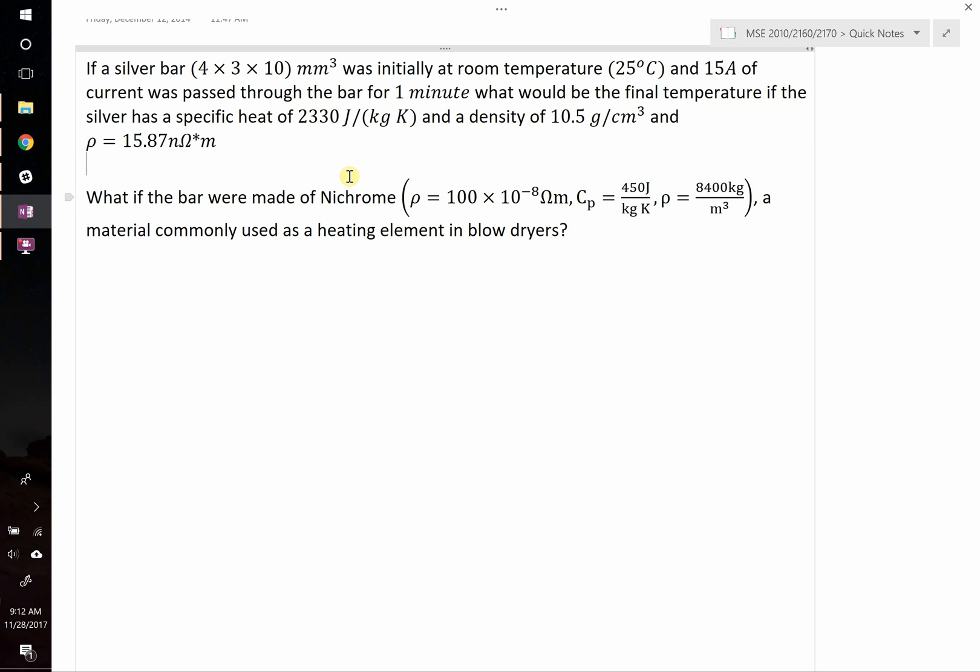So first let's write an expression for the amount of heat generated when you pass current through this material. We know that the heat generated should be proportional to the current squared times the total resistance multiplied by time. And then we know that the heat capacity is equal to the amount of heat that goes into a material to heat some mass some change in temperature.